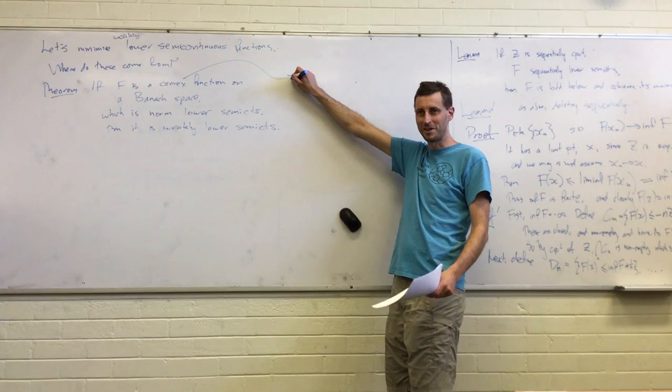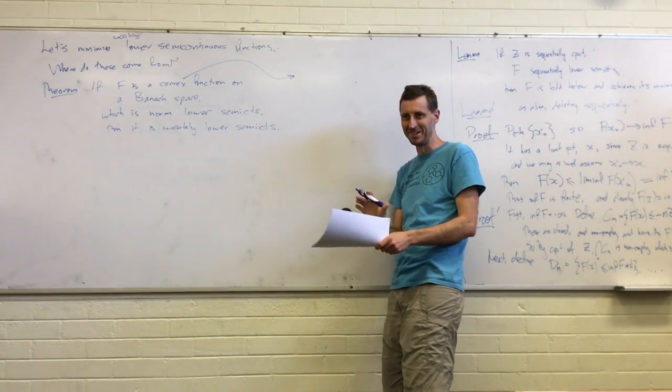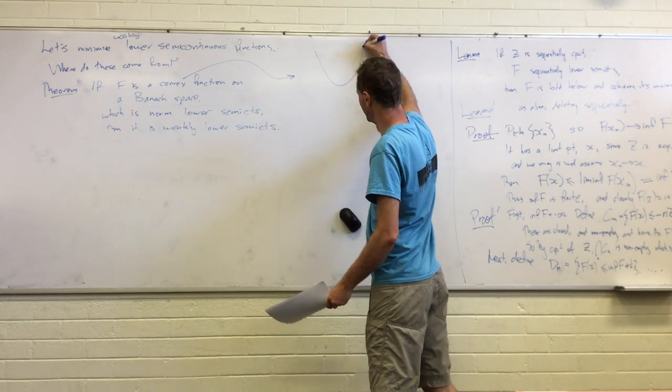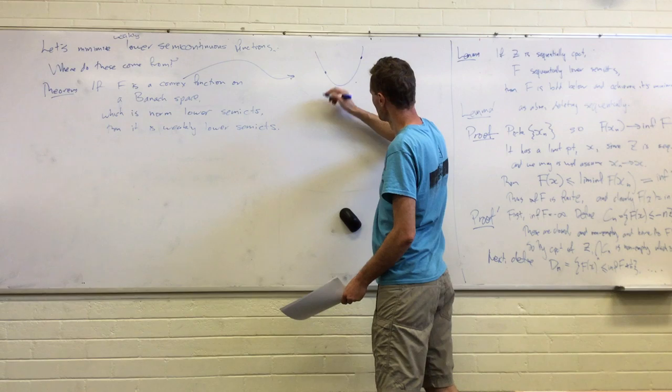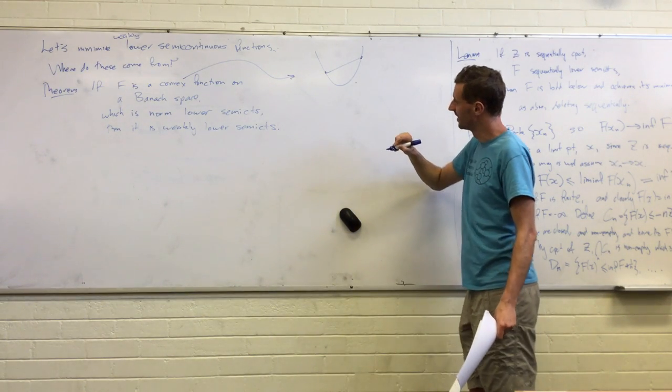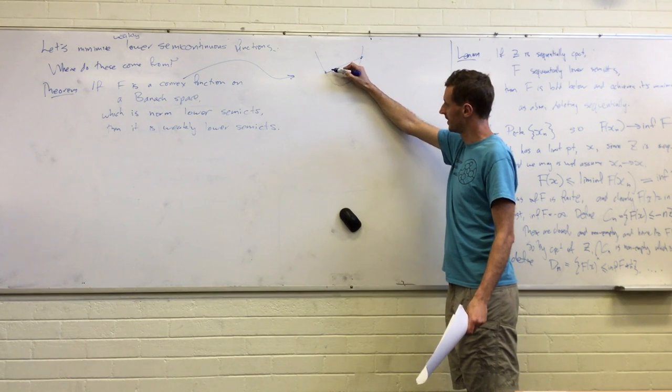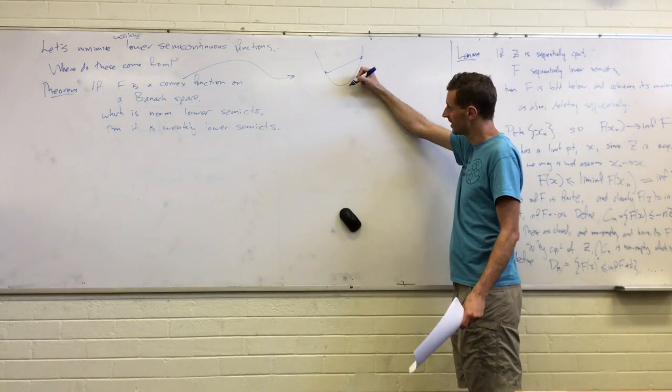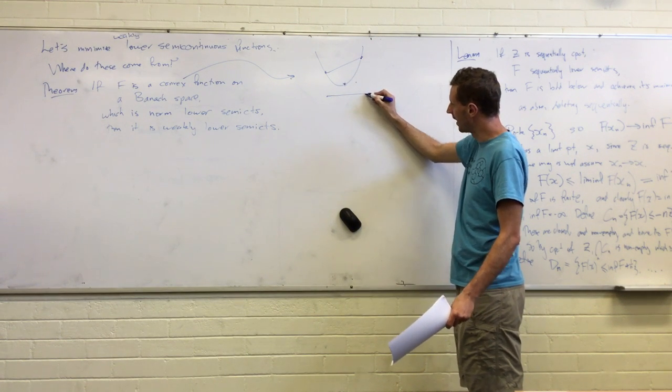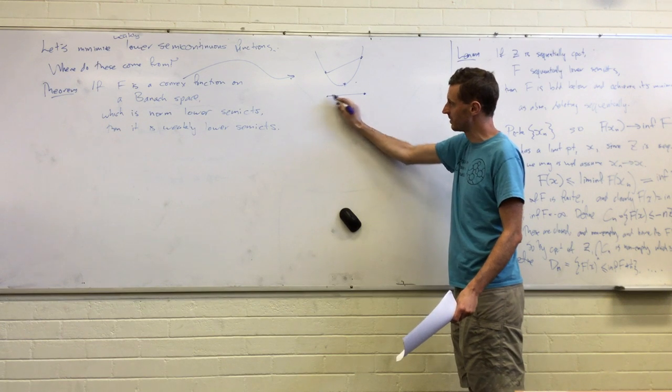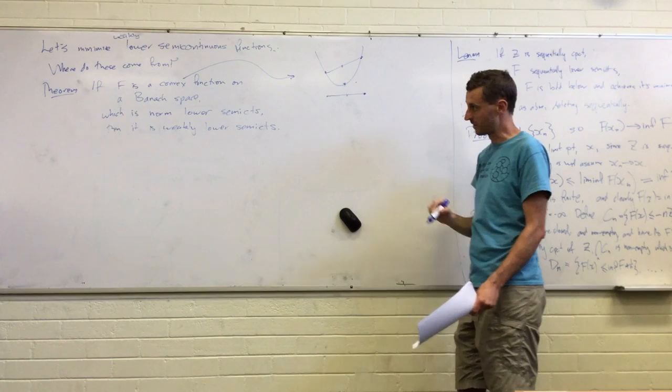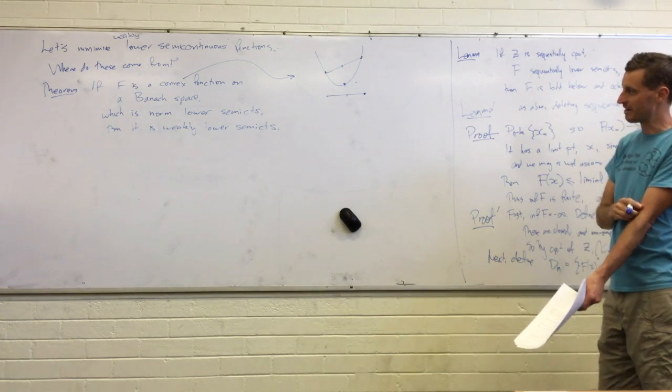Do you want to tell me what convex means? It's just that if you pick any two points and you look at the interval between those two values in the reals, then the value of the function at any point on that interval in the Banach space between those two points is less than the interval in the value at the end of the Banach space. Okay. That's great.